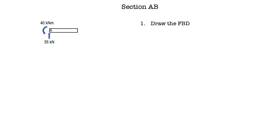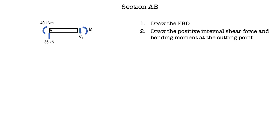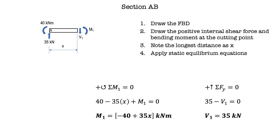For section AB, we draw the free body diagram, then draw the positive internal shear force and bending moment at the cutting point — shear force is downward and bending moment is counterclockwise. We mark this cutting point as 0.1, so the internal shear force and bending moment are noted as V1 and M1. We note the longest distance as X, which varies from 0 to 1.6 meters. Applying static equilibrium equations, the internal bending moment is negative 40 plus 35X kNm, and the internal shear force is a constant 35 kN.